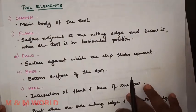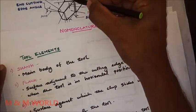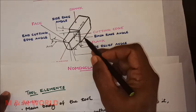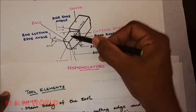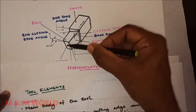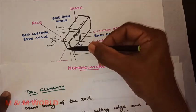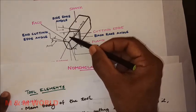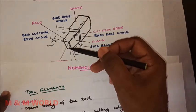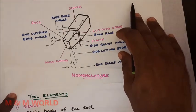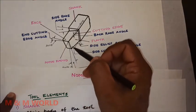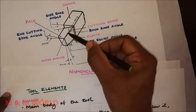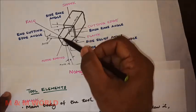To summarize the tool elements: the shank is the main body; the base is the bottom surface; the flank is the surface adjacent to the cutting edge — with side flank and end flank; the face is the surface against which the chip slides upward; the heel is the intersection of flank and base; and the nose is the point where the side cutting edge and end cutting edge meet.